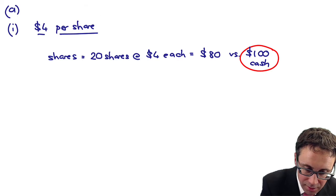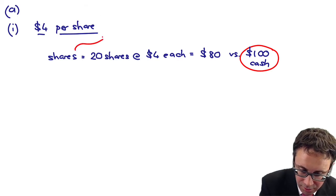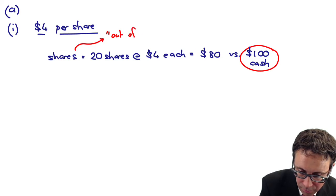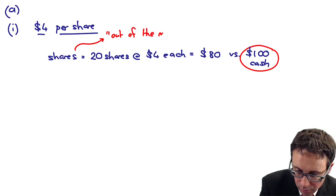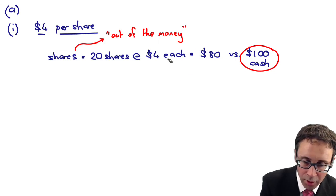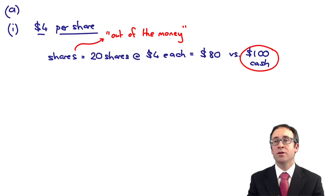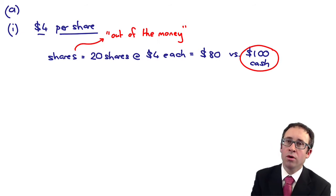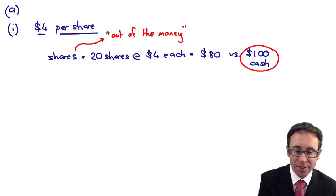Therefore, what you could say is that the debentures are out of the money, because you are not going to convert them for the shares because the cash is worth more. The shares are worth less.